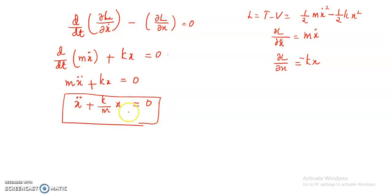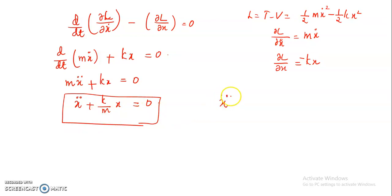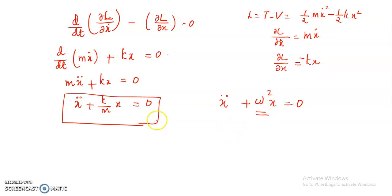This equation represents simple harmonic motion. It is similar to the standard expression X double dot plus omega squared X equal to 0, where omega is the angular frequency. Comparing the two equations, we can write omega equal to the square root of K by M.